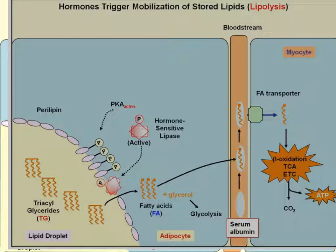This process is very controlled because once you cleave these triglycerides, it takes a lot of ATP to reattach them to a glycerol subunit. So you don't want to cut them off and then re-add them, wasting ATP — the body wants to conserve energy.